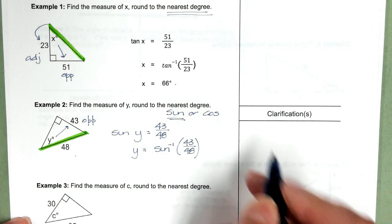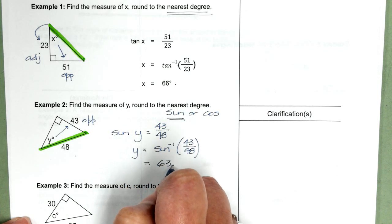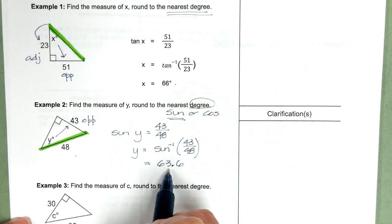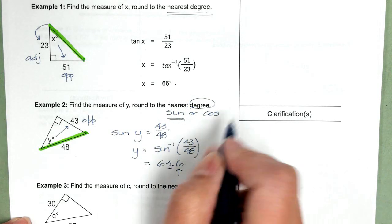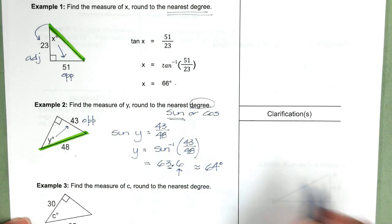To solve for y, I'm going to take the inverse sine of 43 over 48. Plug that in the calculator. You get 63.6. We want it to the nearest degree. Here's the nearest degree. It's followed by a 6. So this gets rounded up to 64 degrees.